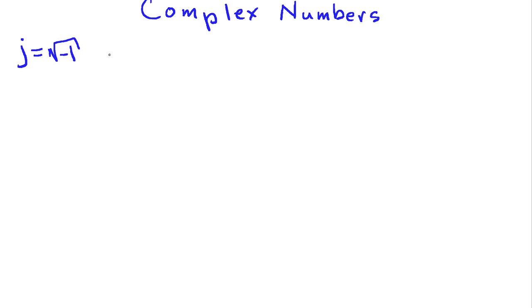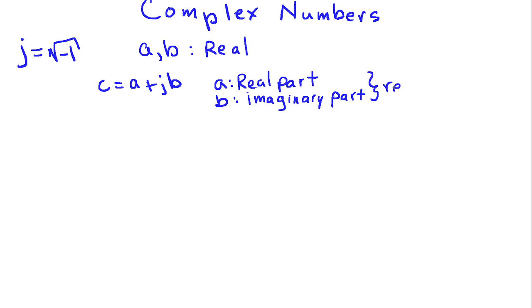Now mathematicians typically use the symbol i, but it's more common in engineering to use j. Then I'm going to introduce two real numbers, let's call a and b be real numbers, and then I can come up with a complex number, which I'll call c, and we'll write that as c equals a plus jb. So a is the real part, b is the imaginary part, and the way I've expressed this number, this format is called rectangular coordinates.